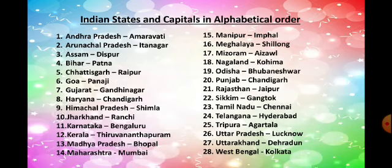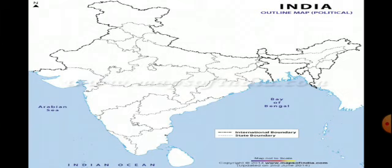All children have already learned the 28 states and capitals, which I gave in alphabetical order. Whenever we do map skills I am going to ask each child the capital of a particular state. So whenever you get the time, please practice the states and capitals along with their spellings. Now this is the political map on which we are going to do the map skills.